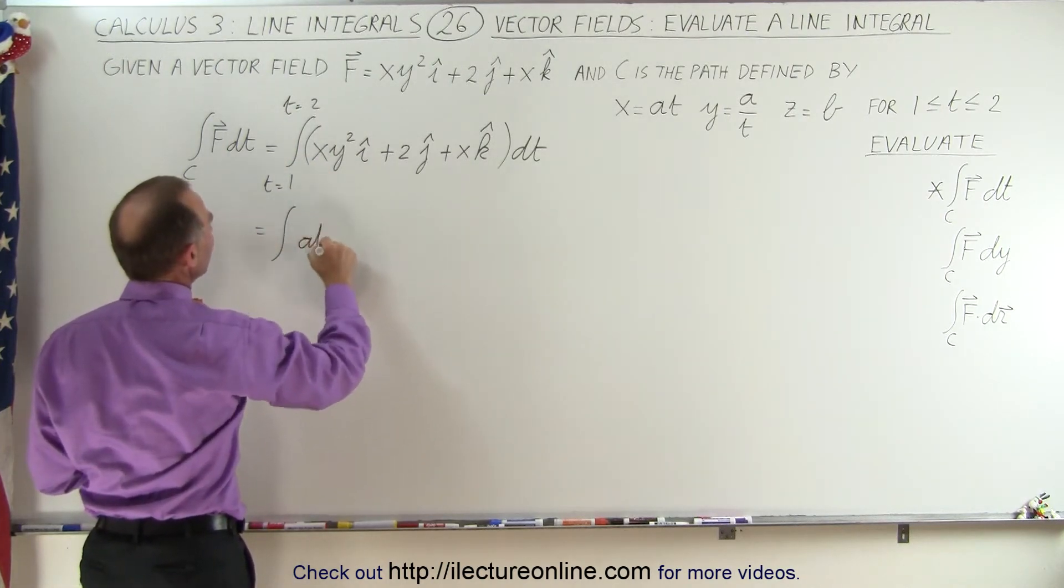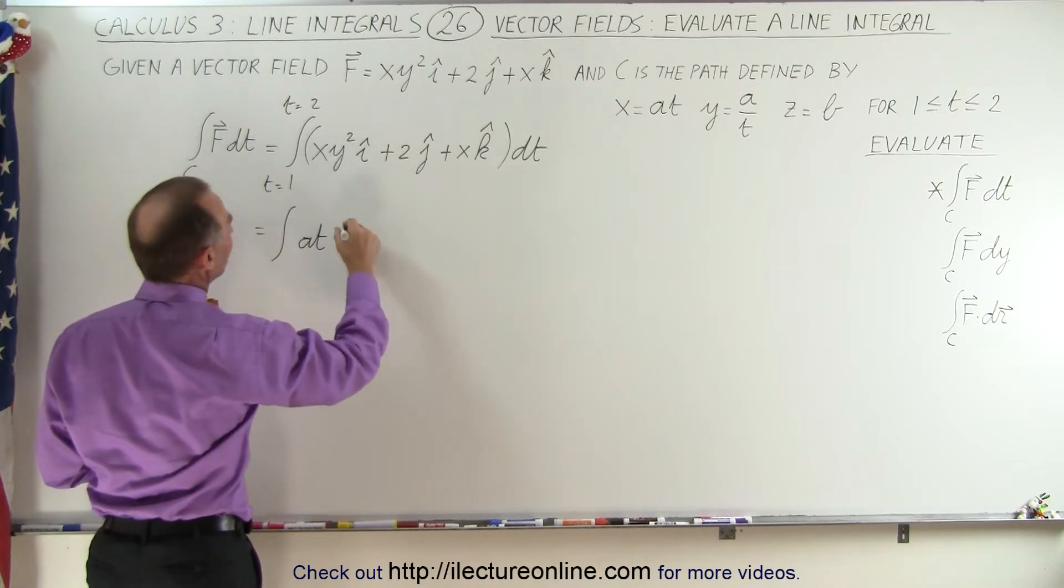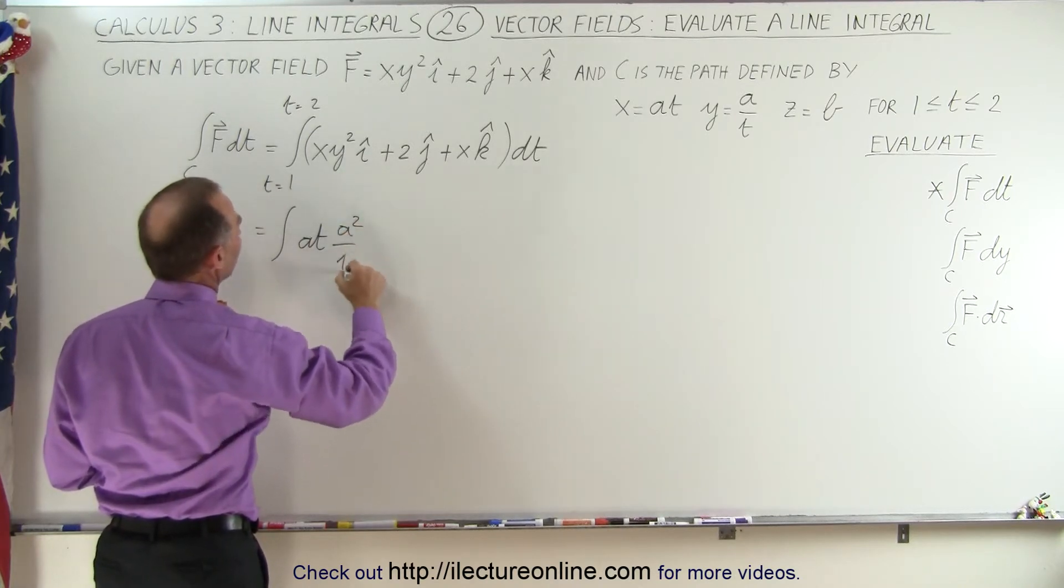So x is a times t, and y is a over t, that becomes a² divided by t².